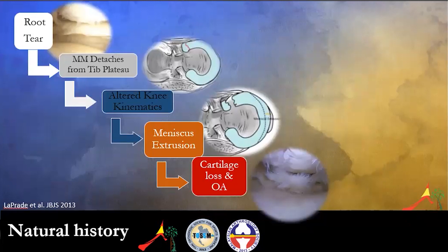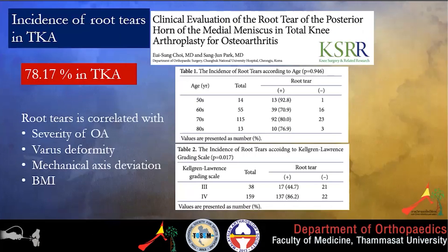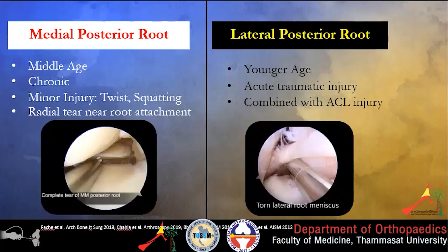Regarding natural history: once the root is torn, the meniscus will detach from the tibial plateau and this will alter knee kinematics. The meniscus will be extruded, diminishing the hoop stress effect, which in turn leads to rapid progression of osteoarthritis. Research by Park and Law showed that 78% of root tears were found in patients undergoing total knee replacement, and root tear is correlated with severity of osteoarthritis, varus deformity, mechanical axis deviation, and increased BMI.